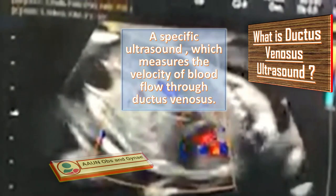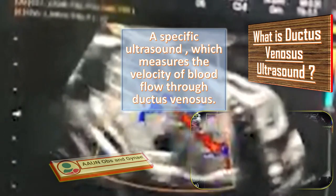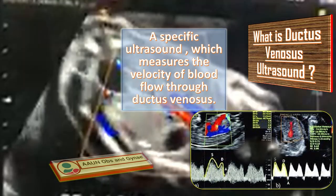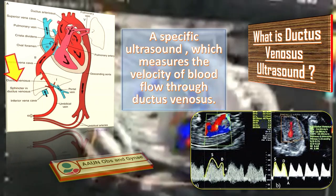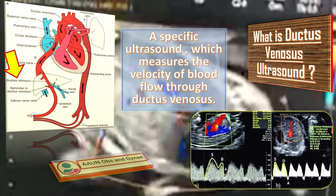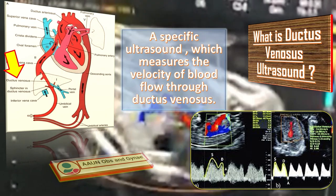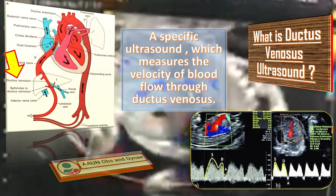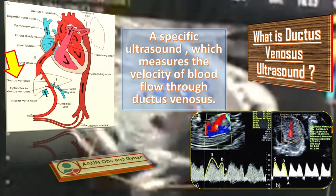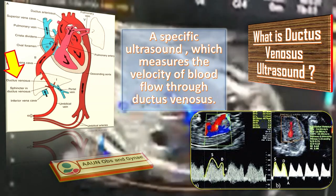What is a ductus venosus ultrasound? The ductus venosus ultrasound is a specific ultrasound which mirrors the velocity of the blood flow through the ductus venosus. As you can see in this picture, this is the fetal ductus venosus blood vessel.